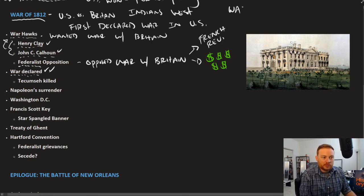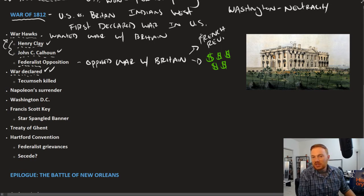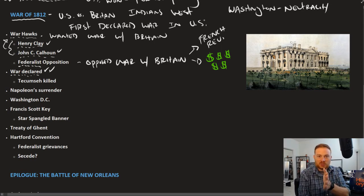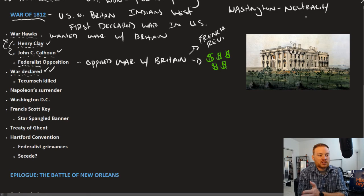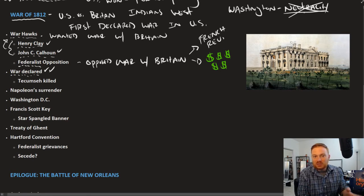Recall that Washington's position was neutrality. By the time you get to 1812 — going from Washington, John Adams, Thomas Jefferson, now James Madison, who is the fourth president, a Democratic-Republican — the United States can no longer maintain this neutrality and has found itself now at war with Great Britain.